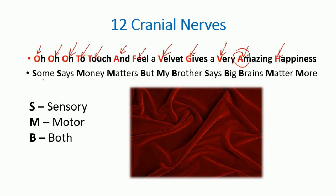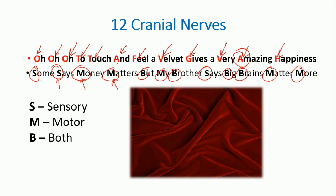Now using the second sentence — 'Some says money matters but my brother says big brains matter more' — each first letter tells us whether the nerve is sensory, motor, or both. Olfactory is S (sensory), Optic is sensory, Oculomotor is M (motor), Trochlear is motor, Trigeminal is B (both), and so on through to Hypoglossal, which is also motor.